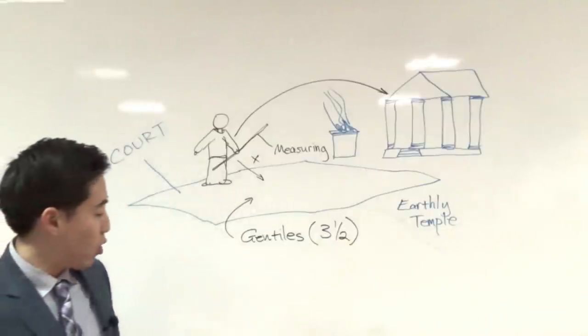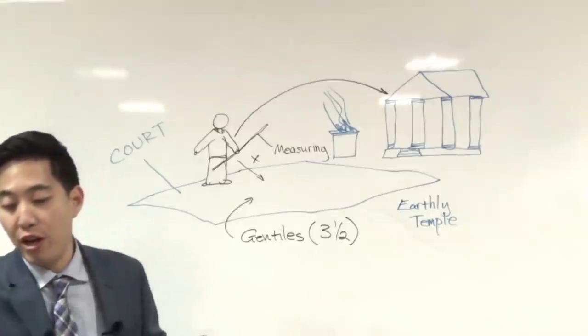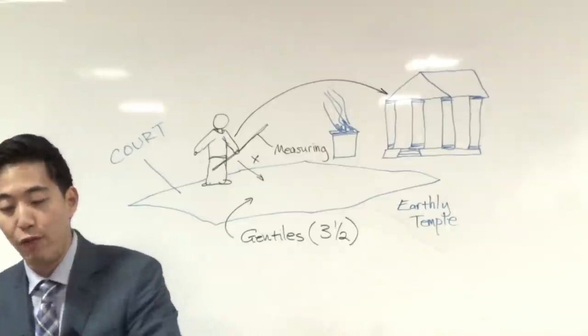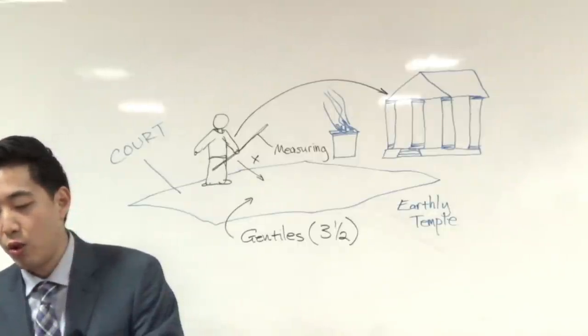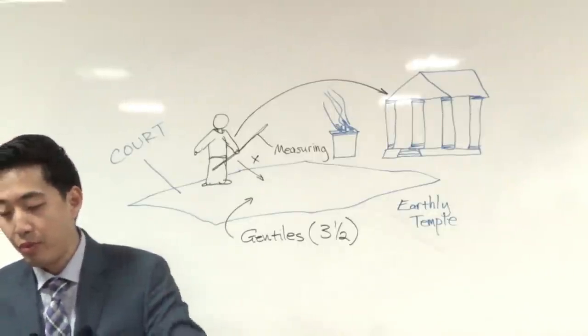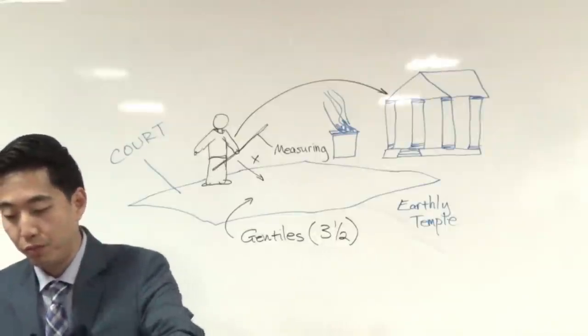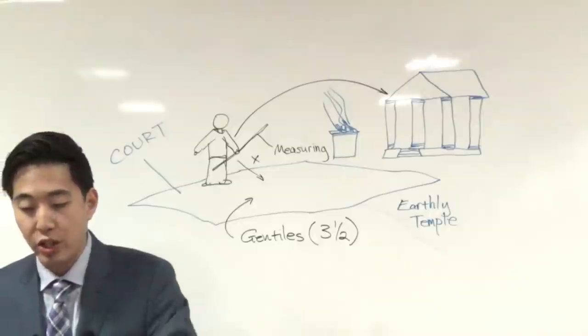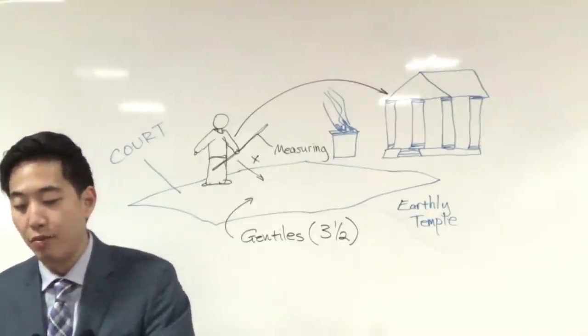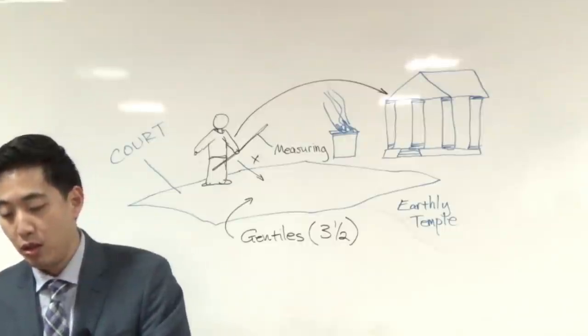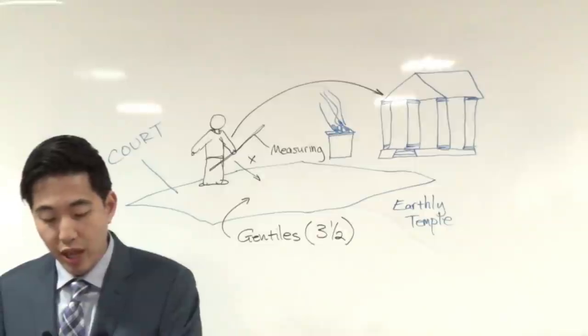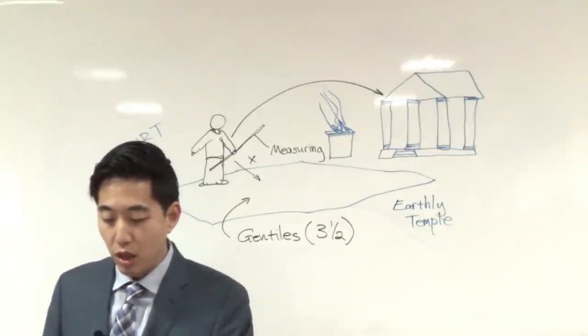We're going to look at, keep your bookmark over here at Revelation 11. We're going to go to Matthew 24. Go to Matthew 24 and Daniel 9. We're going to go to Daniel 9 and Matthew 24. There's a desecration going on over here. An abomination of desolation, so to speak. Daniel 9, we're going to read verse 27.